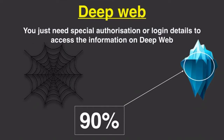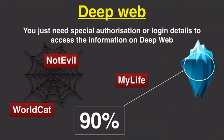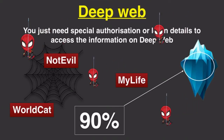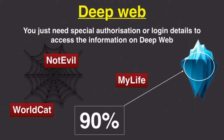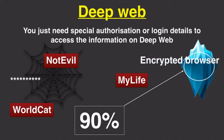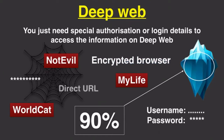This means you will not access this data with a simple search. You would need search engines like WorldCat, Not Evil, MyLife, etc. Deep web includes everything that search engines cannot identify because it is protected — this is why web spiders are invisible to it. Surface web and deep web are both accessible by the general public, but they require different methods: usually a specific password, encrypted browser, login details, or direct URL.